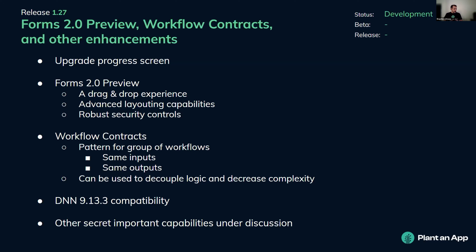We're also going to adopt the latest .NET version 9.13.3 — we delayed this because 9.13 had various issues until the .3 version. This will be part of the 1.27 release. We do have other secret things we're working on and will announce them in due time.